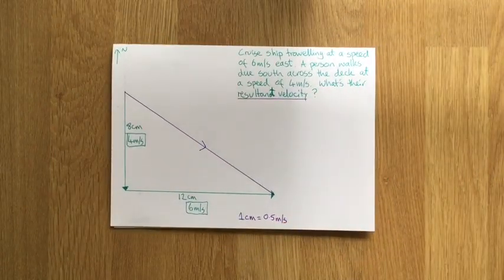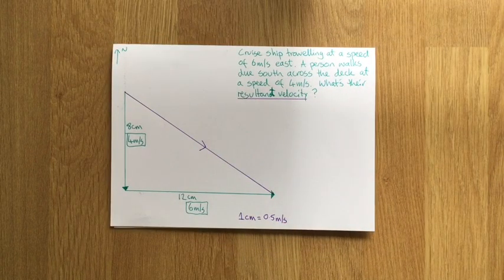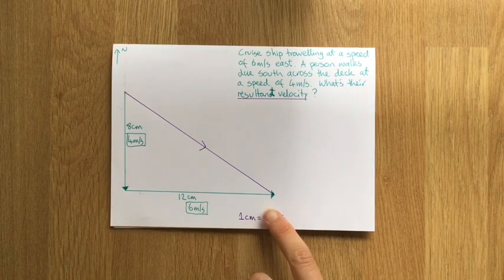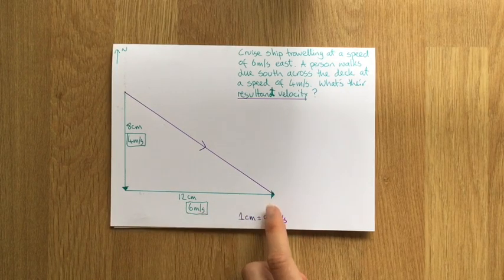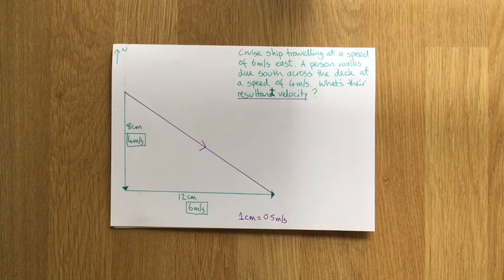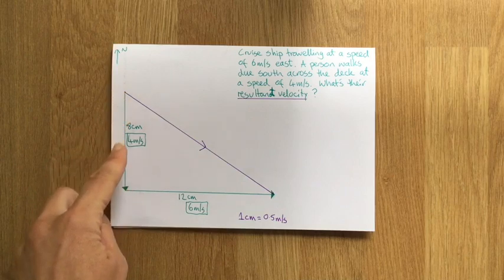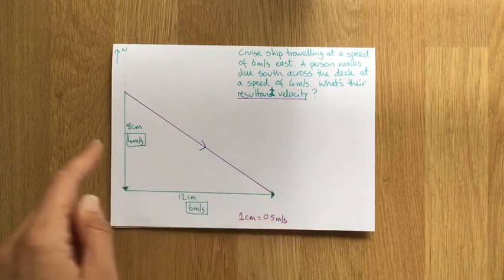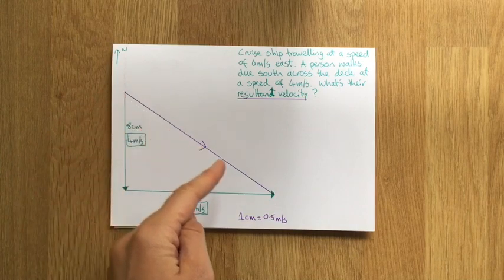One more. So another one involving a boat. This time we've got a cruise ship. The cruise ship's traveling 6 meters per second east. And while that cruise ship's going at 6 meters per second east, someone is walking across the deck of the cruise ship, but they're actually walking due south. So they're walking due south, but at the same time, the ship's moving that way. So their overall movement is actually going to be this way.